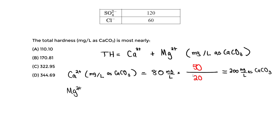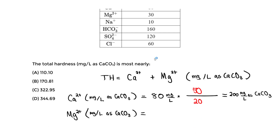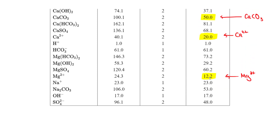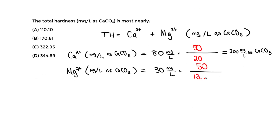Now let's do the same for magnesium, then we'll add both. The magnesium concentration is 30 mg per liter. We take 30 × (50 / 12.2), where 50 is the equivalent weight of calcium carbonate and 12.2 is the equivalent weight of magnesium from the table. This equals approximately 122.95 mg per liter as calcium carbonate.